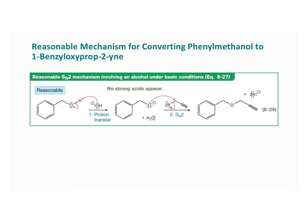A more reasonable mechanism is one where the base comes in first and removes a proton. The electrons go onto the oxygen — it's deprotonated — and that makes sense in a basic solution. Those electrons then come over, we have the SN2 reaction, the bromine leaves, and now we have the product and bromine minus. Double-check that you are not forming any strong acids, and as we can see, no strong acids are formed here. All we've done is switch the two steps, and this is a reasonable mechanism.